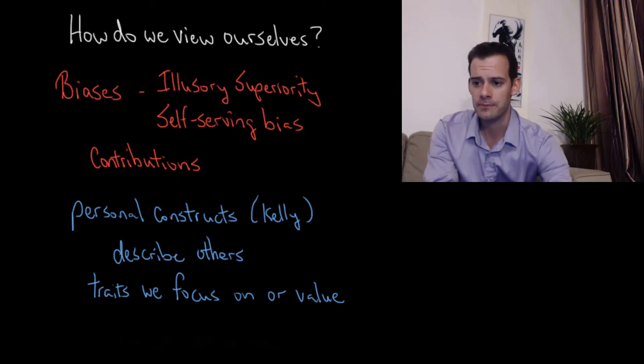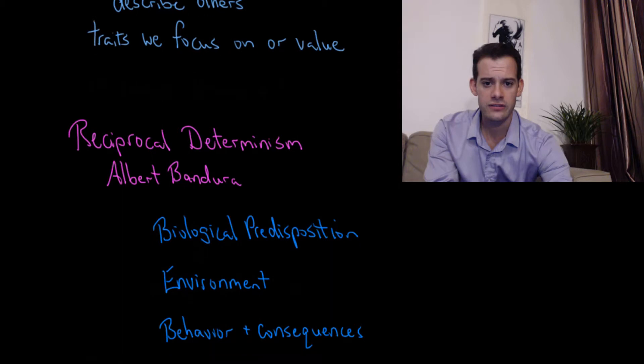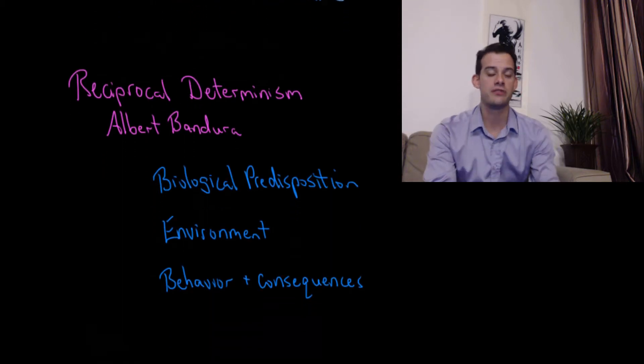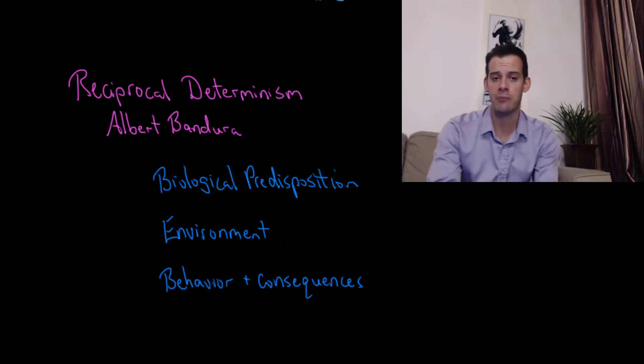Now another way we can think about the self is what's called reciprocal determinism. And this refers to how it develops. And this comes from Albert Bandura, who you might recall from his Bobo Doll study on observational learning.